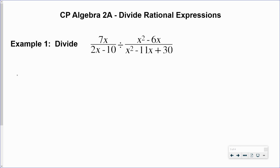So what I'm going to do is I'm going to multiply the first rational expression by the reciprocal of the second rational expression. So that's going to give us 7x over 2x minus 10 times x squared minus 11x plus 30 all over x squared minus 6x.